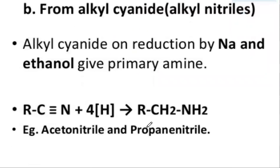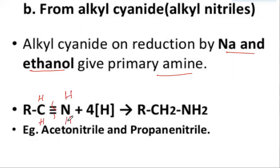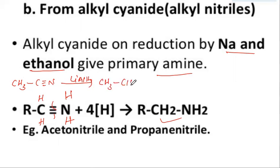Next, from alkyl nitriles (also called cyanides): alkyl nitriles can be reduced by sodium and ethyl alcohol or lithium aluminium hydride to give primary amines only. For example, ethyl nitrile (methyl nitrile) upon reduction gives ethylamine. The cyanide group (nitrile group) upon reduction produces amines — generally only primary amines are obtained.